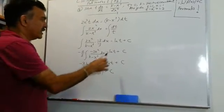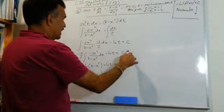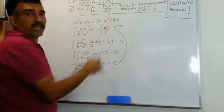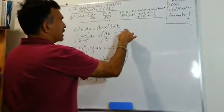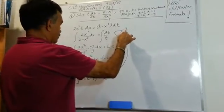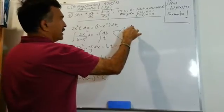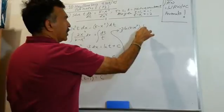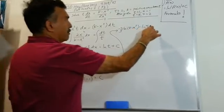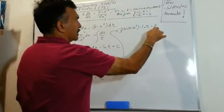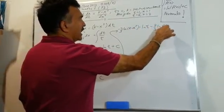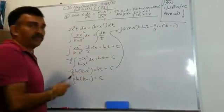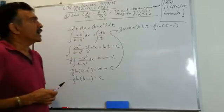Good. Now let's rewrite our answer. This becomes: -2/3 · ln|k - x³| = ln t - 2/3 · ln(k - 1), replacing c with what we have just found.